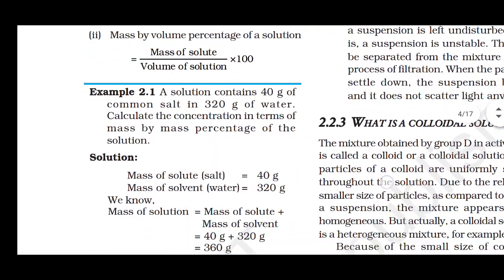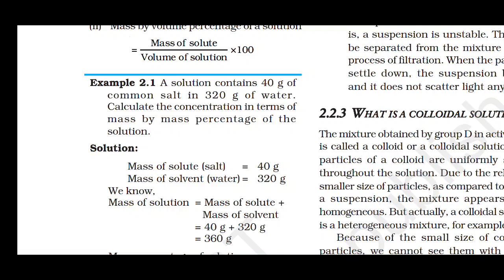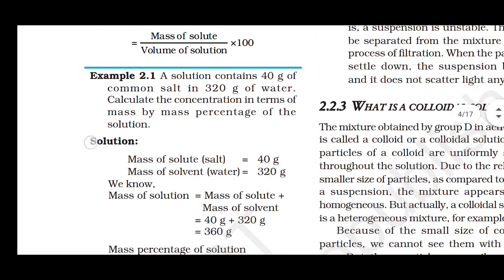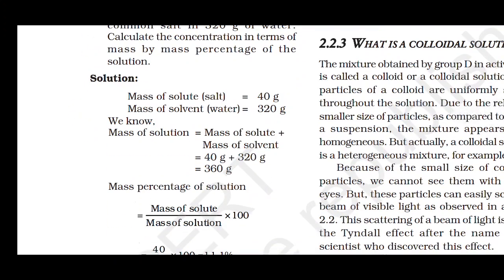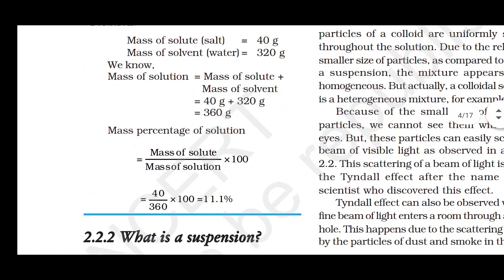Example: A solution contains 40 grams of common salt in 320 grams of water. Calculate the concentration in terms of mass by mass percentage. Mass of solute = 40 g, mass of solvent = 320 g, total mass of solution = 320 + 40 = 360 g. Using the formula: (40 / 360) × 100 = 11.1%.